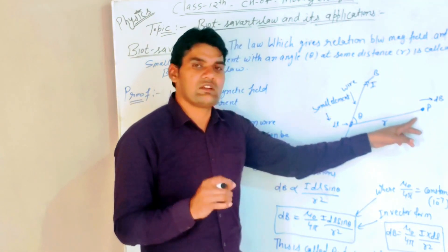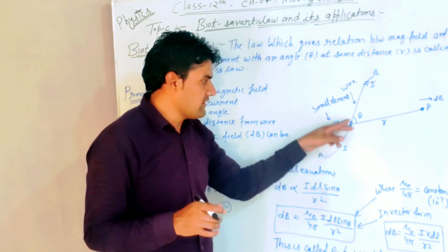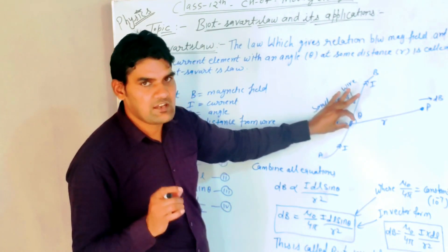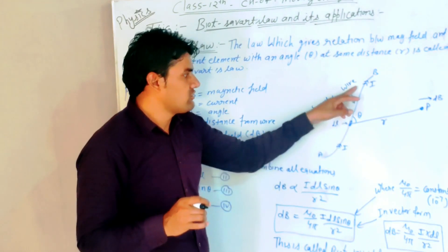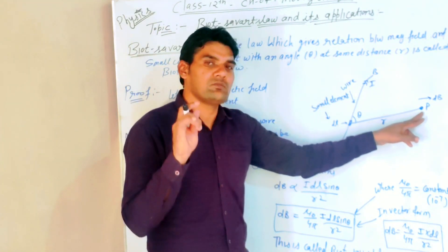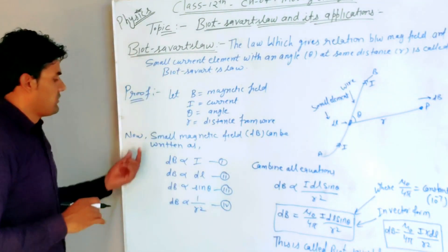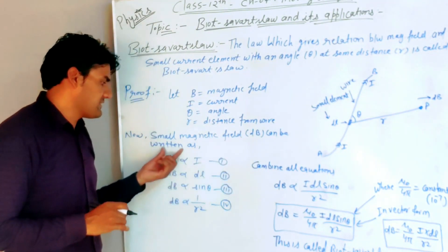At point P, what is the magnetic field? This is angle theta, and this is the small length dL, the small element. This is the wire. We have to find the magnetic field at point P. Now small magnetic field dB can be written as follows.